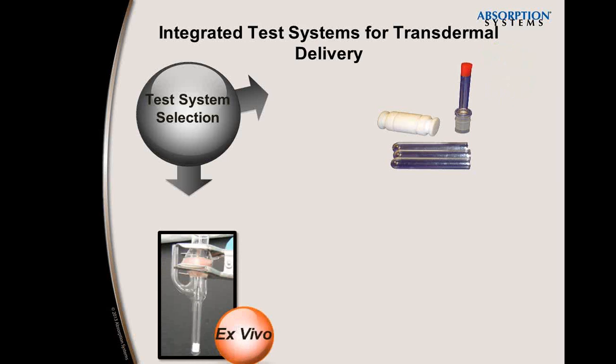For an ex vivo test system, dermal studies are performed with human or porcine skin. The test device is a Franz cell. Test formulations, typically creams or patches, are applied to the external surface, and samples are removed at predetermined time points from the reservoir containing buffer that is in contact with the internal surface. Reference compounds are either co-dosed if the test compound is in solution, or run in parallel if the test compound is in some other type of formulation. The skin is often extracted at the end of the study to quantify accumulation of the test compound.